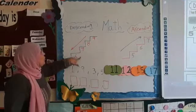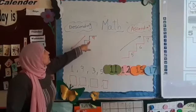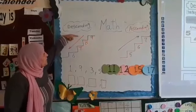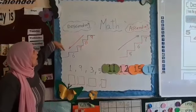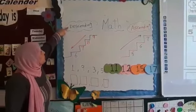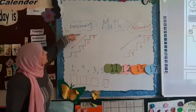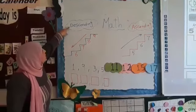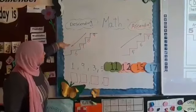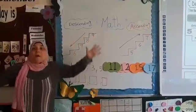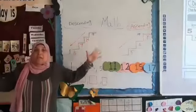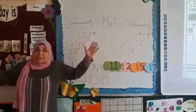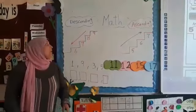And what do we do on the stairs? When we do descending, we go down. D, D, descending. D, D, down. From the biggest to the smallest.